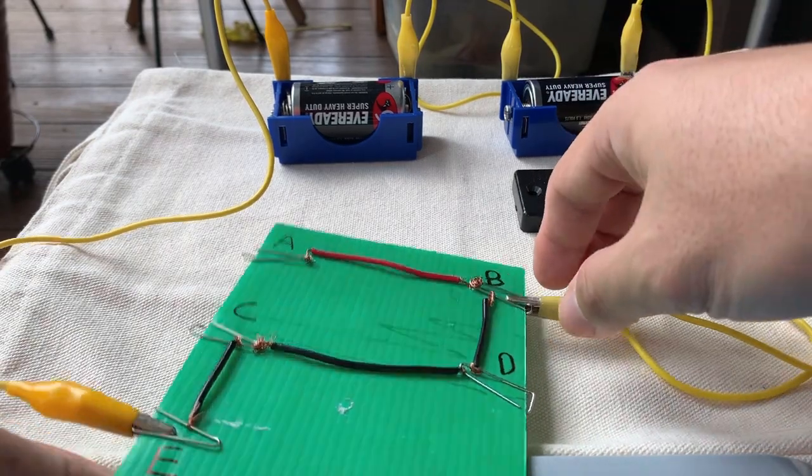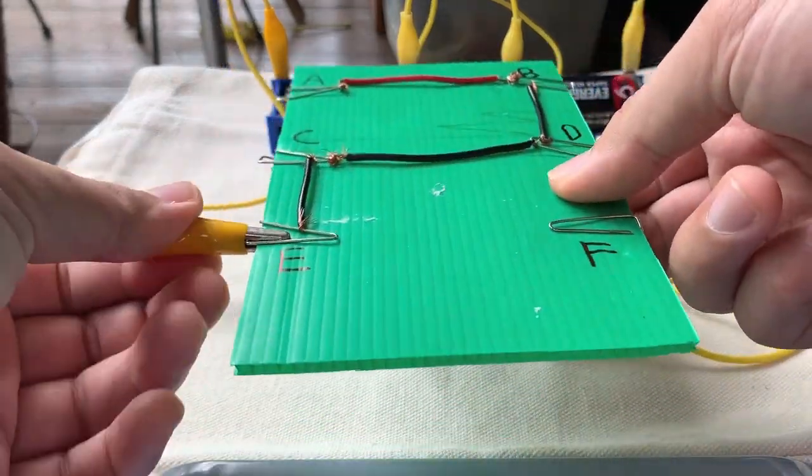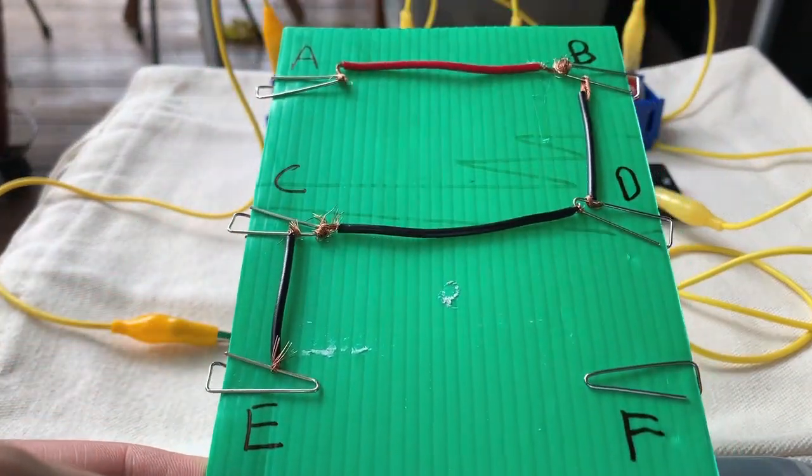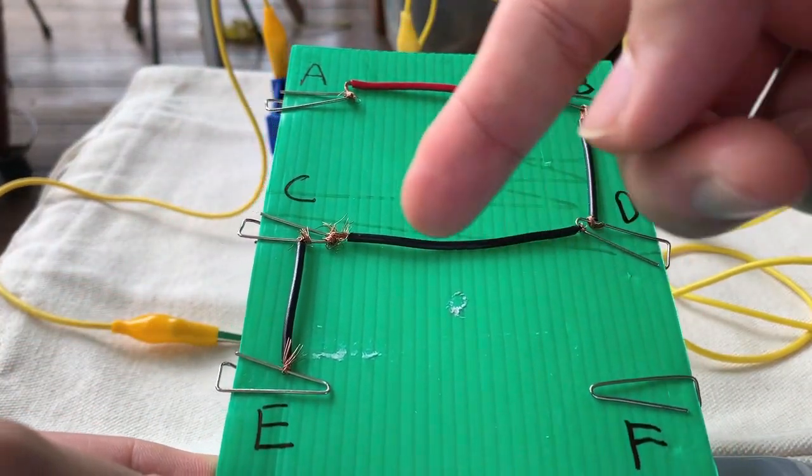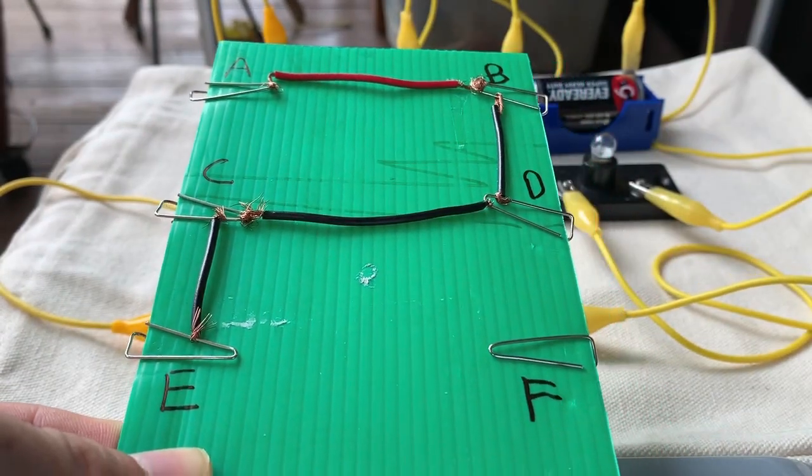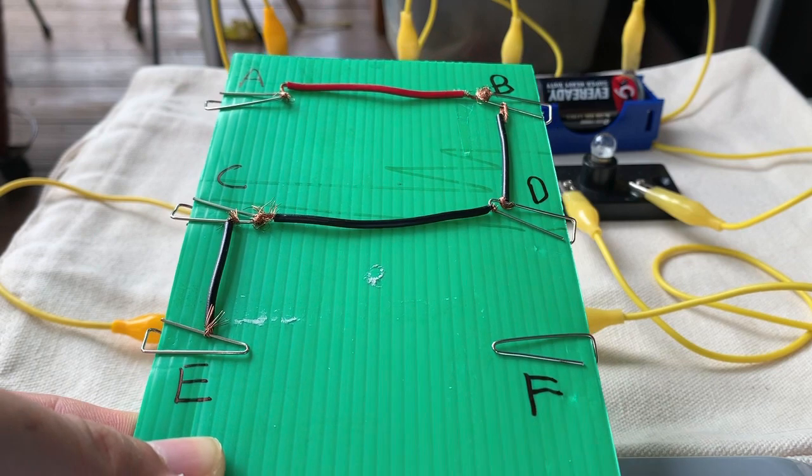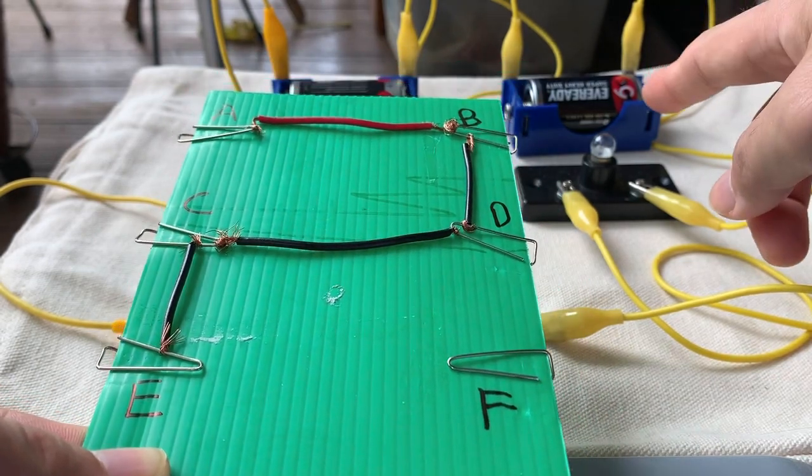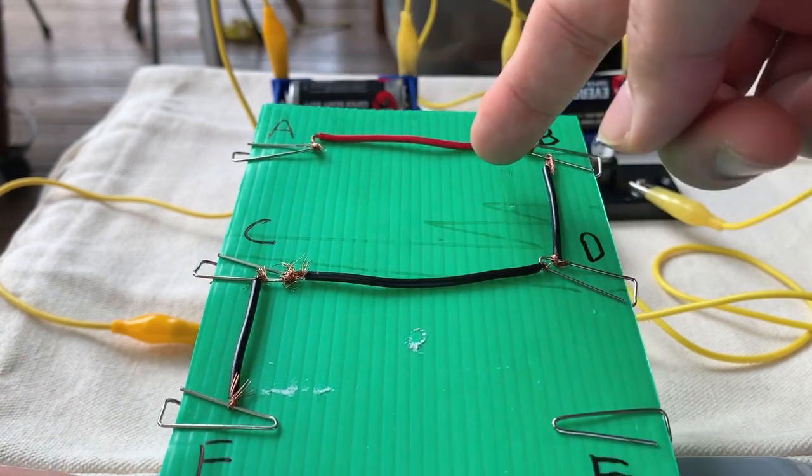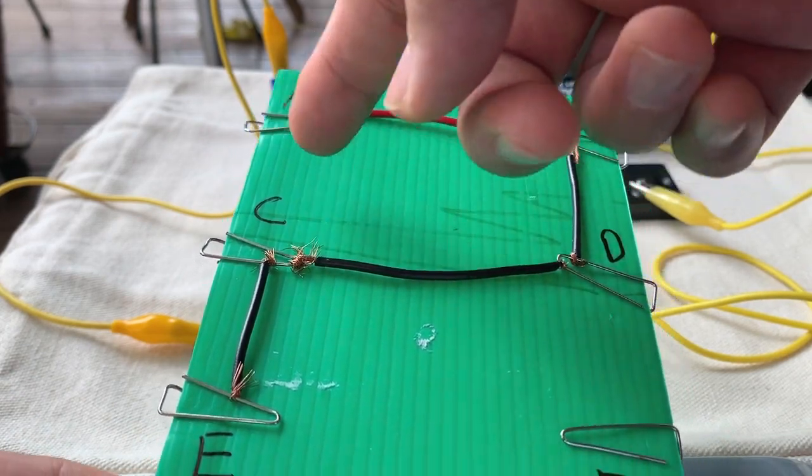This is the circuit card. Now we can configure the wires differently. The thing is, if the bulb lights up, it means there's a closed circuit. It means there's a wire connecting either directly or indirectly.